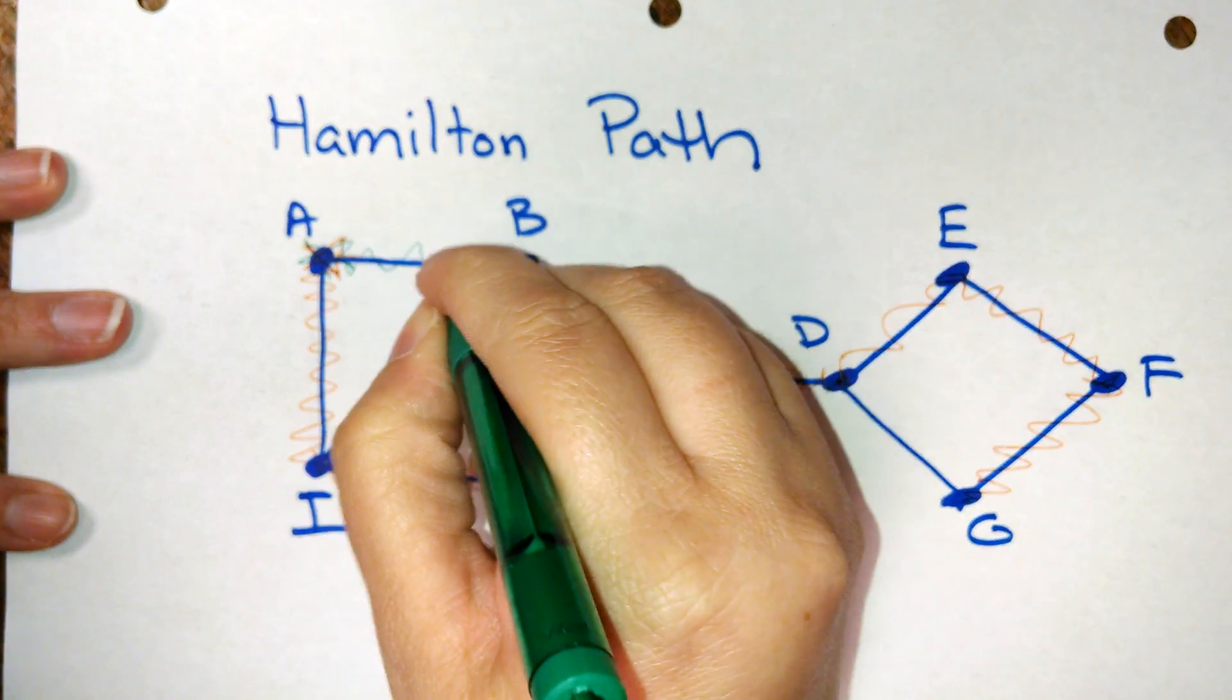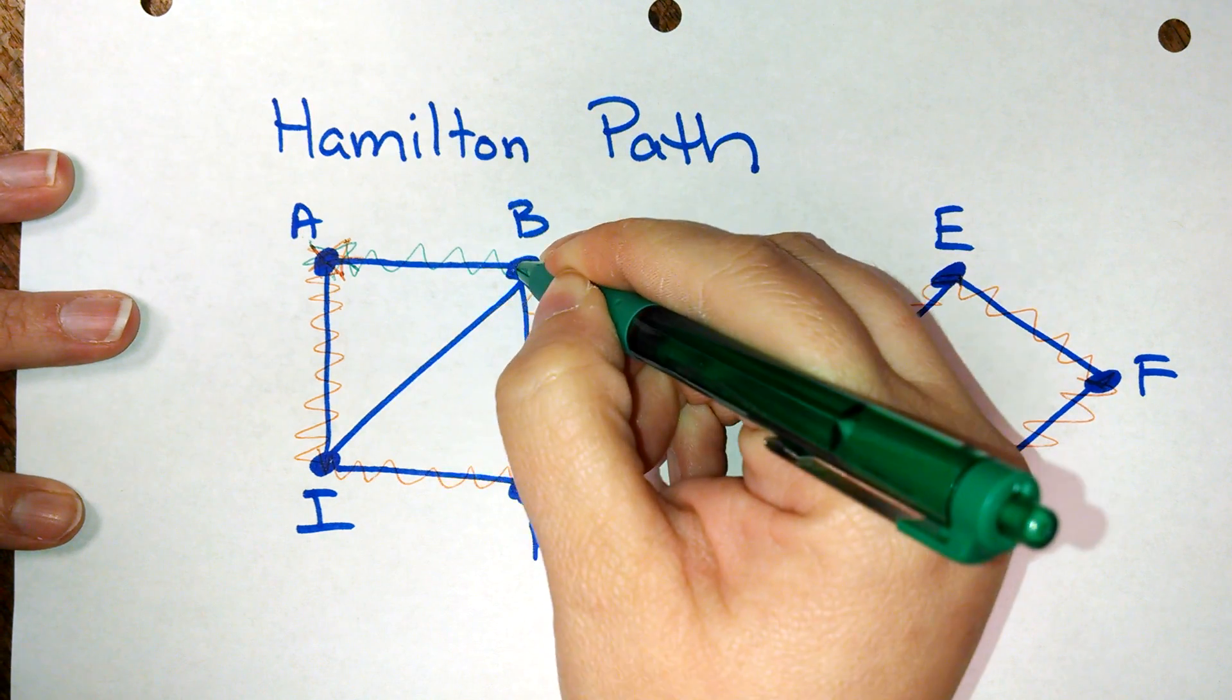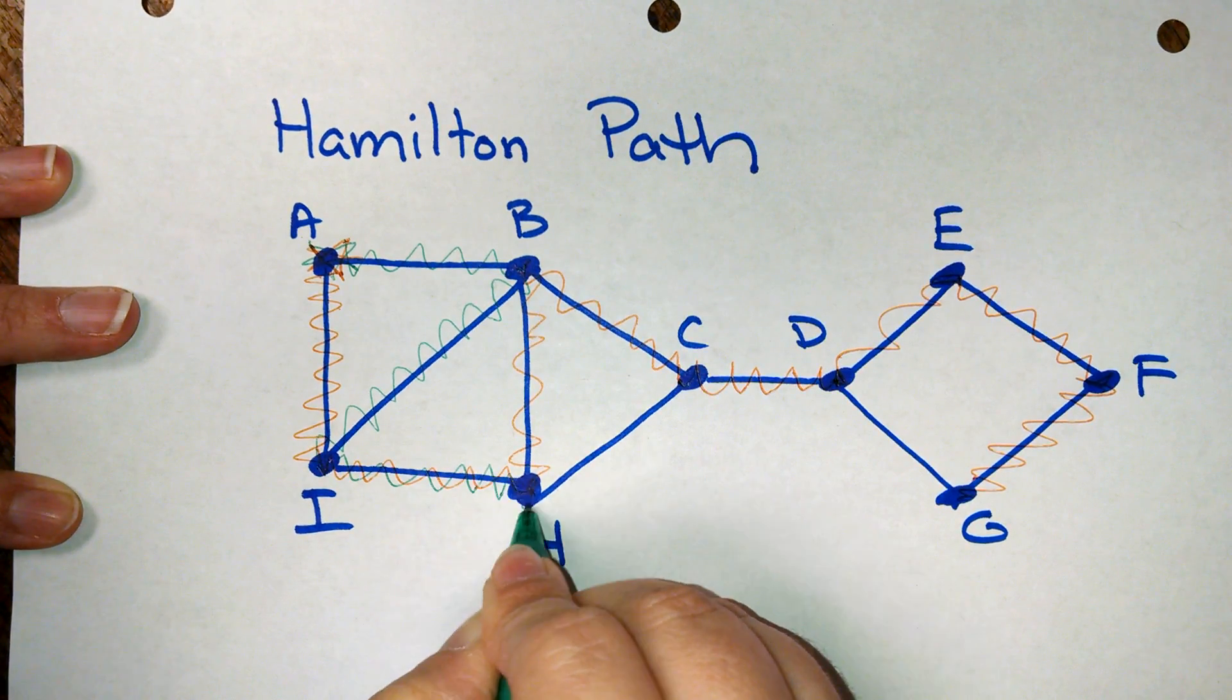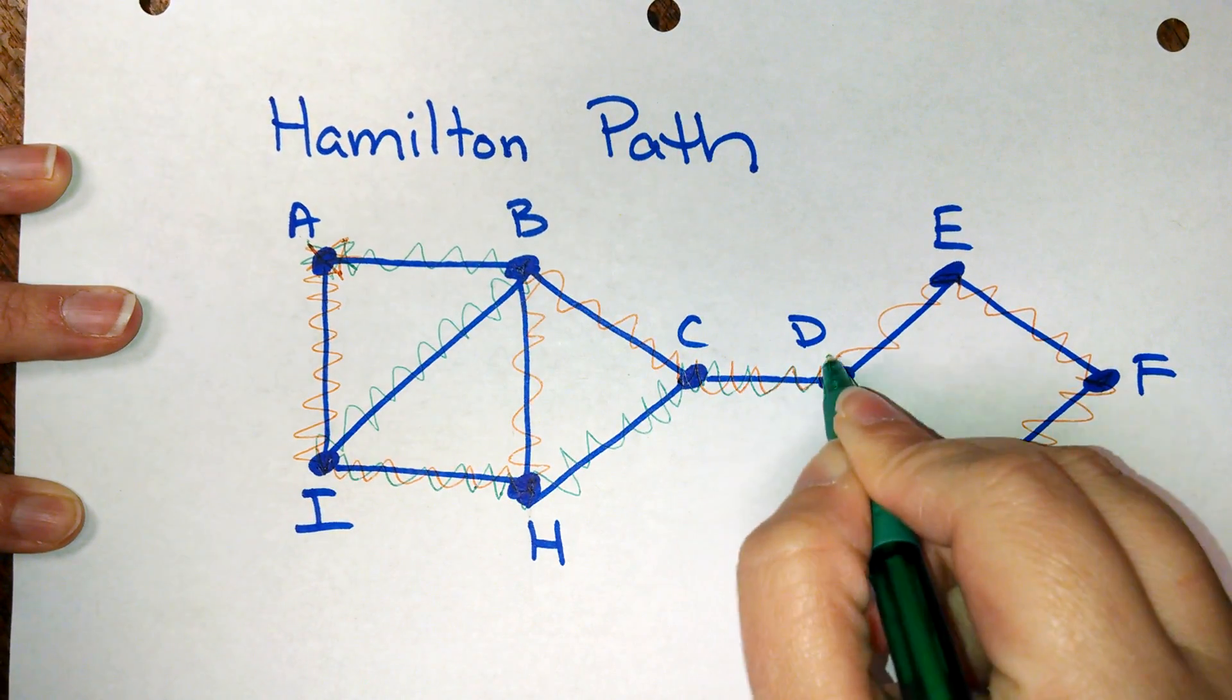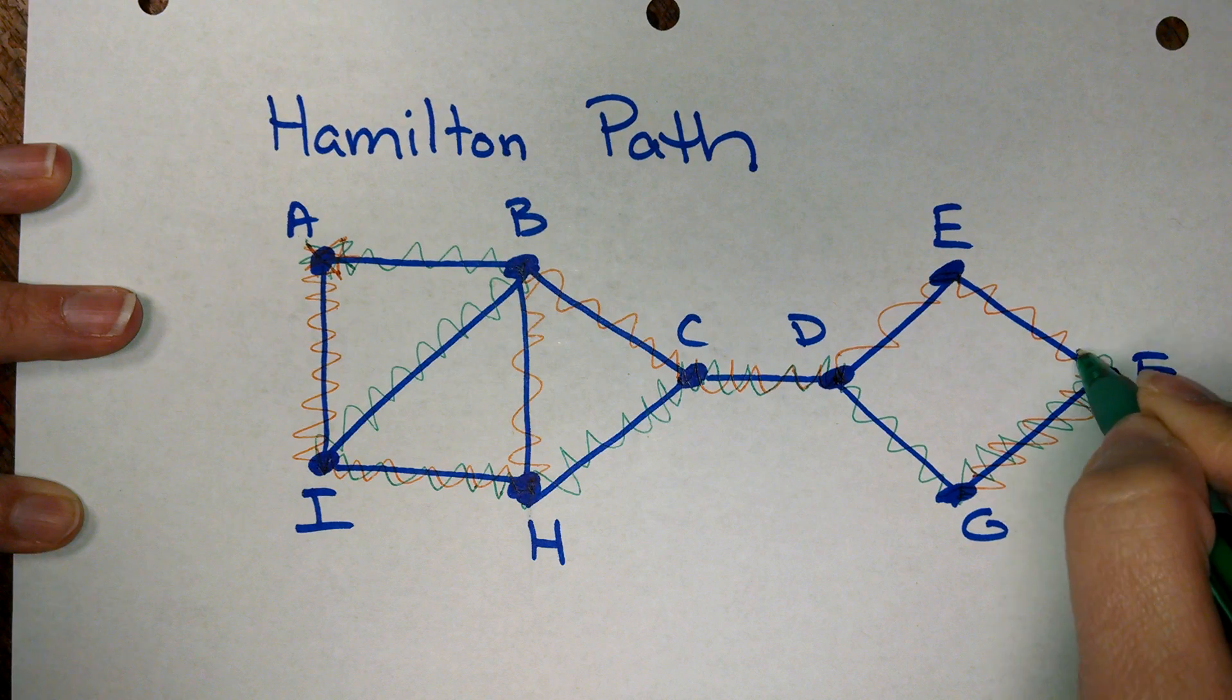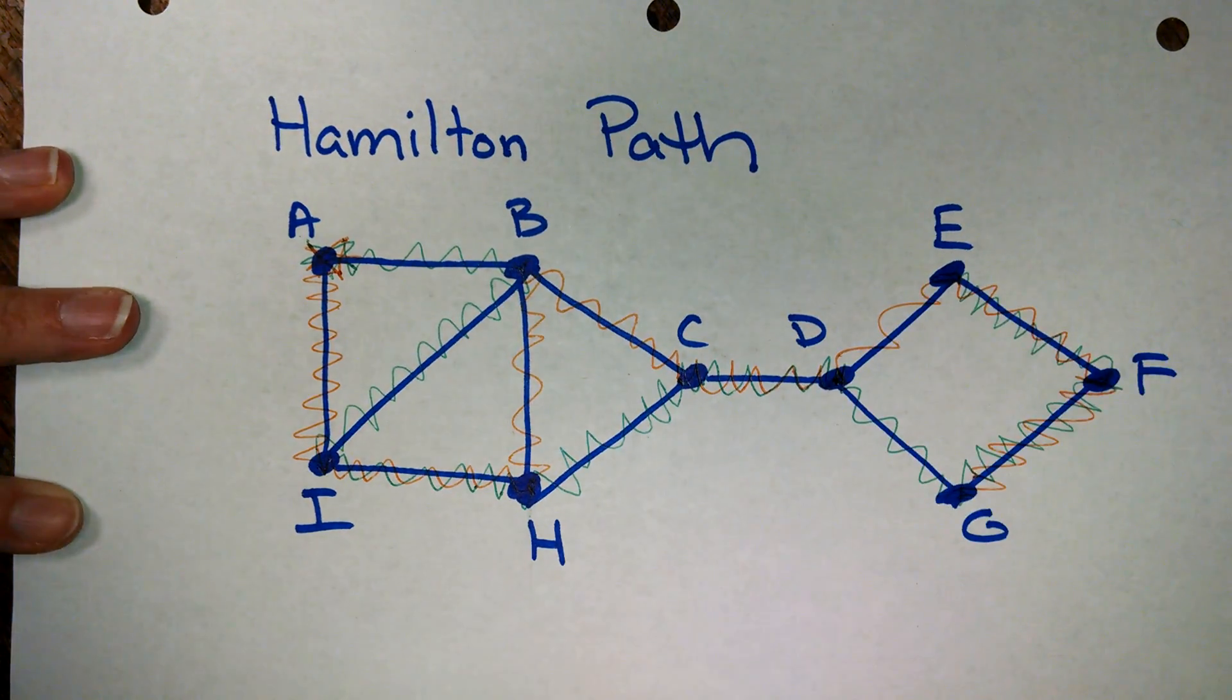What if I went to B first, and then down to I, and then over to H, and then up to C, then to D, down to G, up to F, up to E.